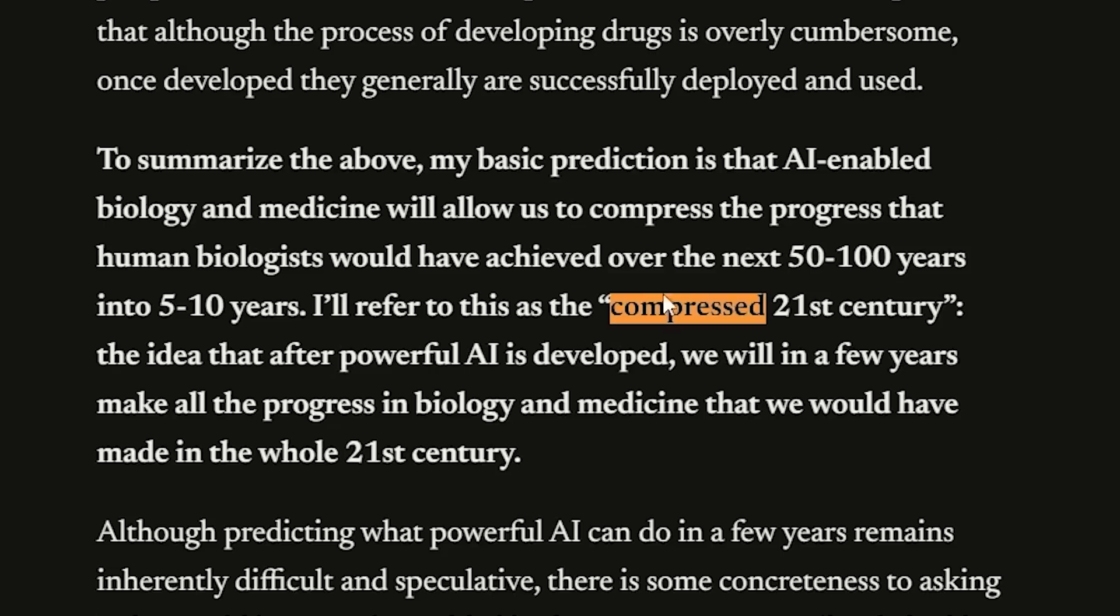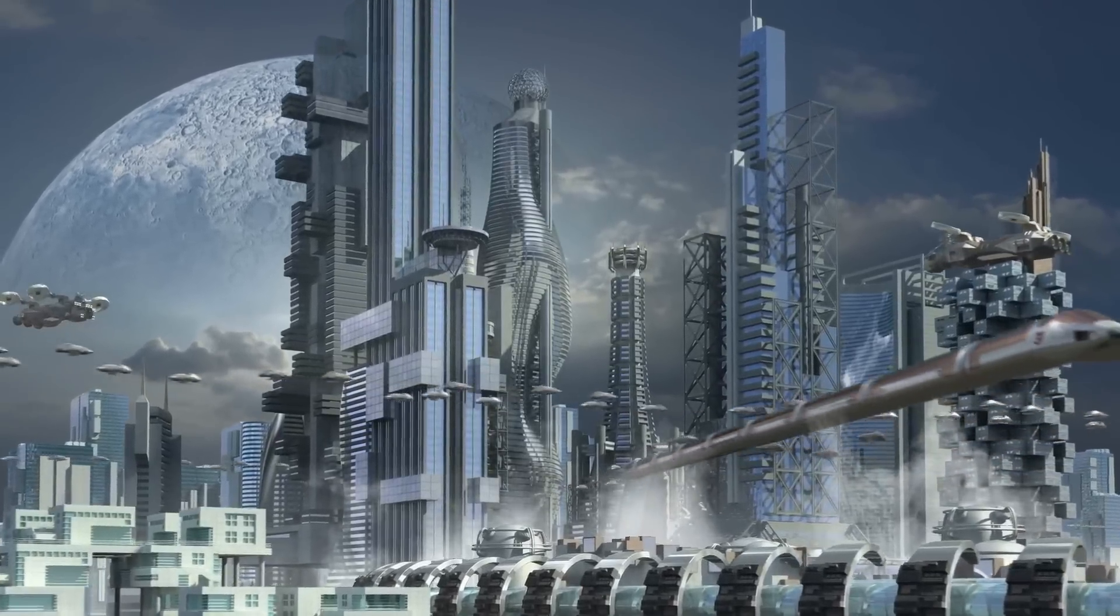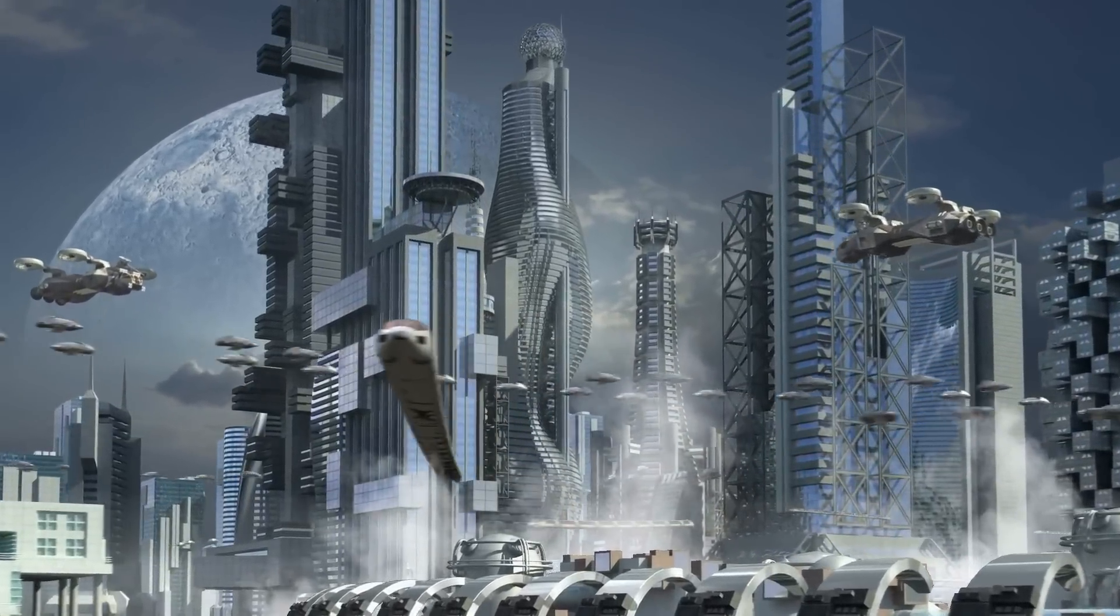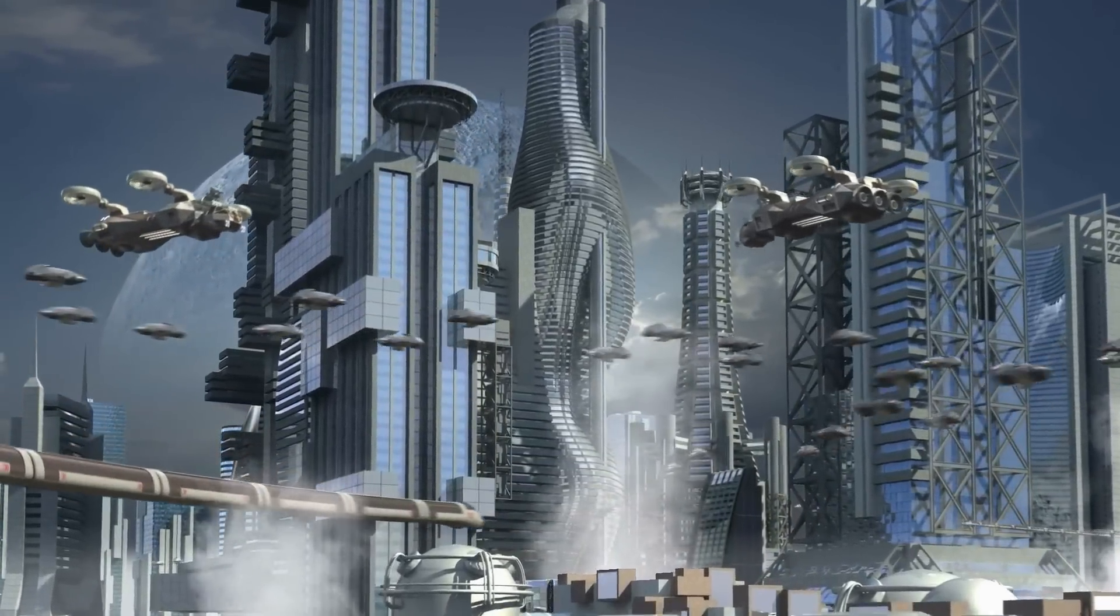From Dario Amodei, the CEO of Anthropic, at his article, what he called the compressed 21st century. Basically, this is the idea that after powerful AI is developed, we will in a few years make all the progress in biology and medicine that we would have made in the entire whole 21st century, which is absolutely incredible. Think about that. That's basically stating that there's going to be 75 years of progress in 5 to 10 years, which is absolutely insane.